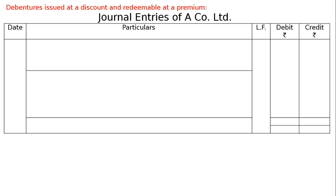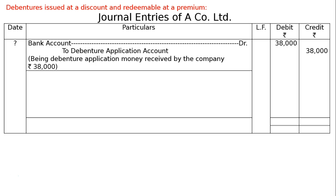Then your format of a journal. The next entry will be bank account debited to debenture application account, being debenture application money received by the company Rs. 38,000. How come? 40,000 and 40,000's 5% is Rs. 2,000. Hence, we will be getting 5% less: 40,000 minus 2,000, that is 38,000.